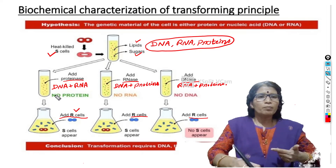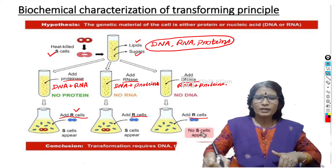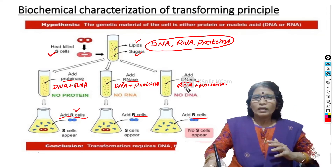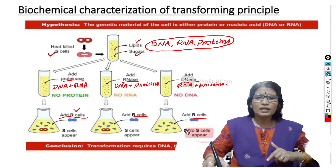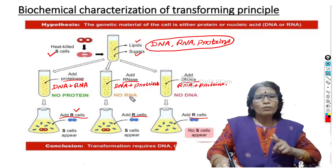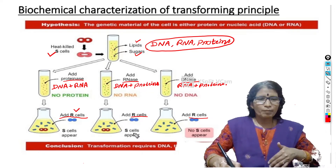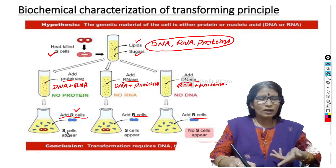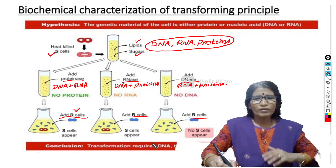The solution was made from heat-killed smooth cells with rough cells added. Living smooth cells appeared in the first two flasks but not in the third. Transformation did not occur in the third flask because only RNA and proteins were present — DNA was completely absent. Whenever DNA is completely absent, transformation does not take place. In the other flasks, DNA was present, so transformation occurred and living smooth cells appeared. This confirmed that DNA is essential for transformation.